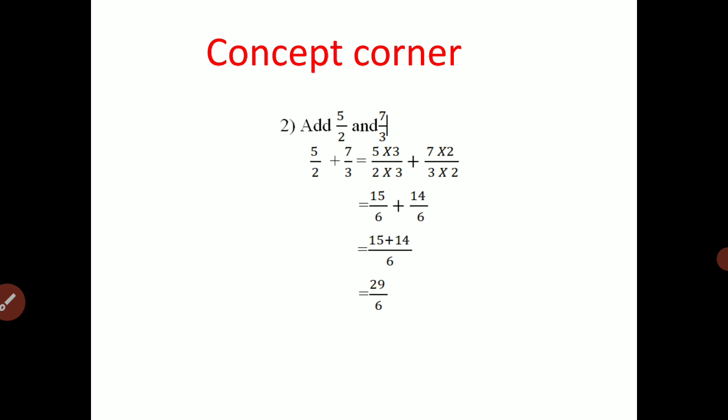The LCM of 2 and 3: the table of 2 — two ones are 2, two twos are 4, two threes are 6. The table of 3 — three ones are 3, three twos are 6. So 6 is the least common multiple. That means 6 is the LCM of 2 and 3.